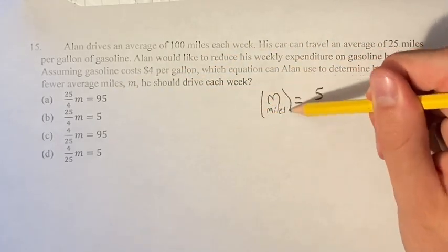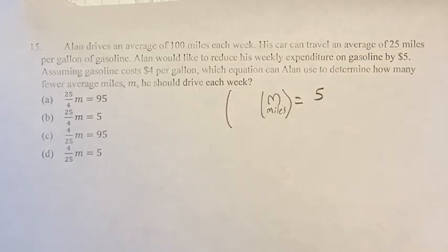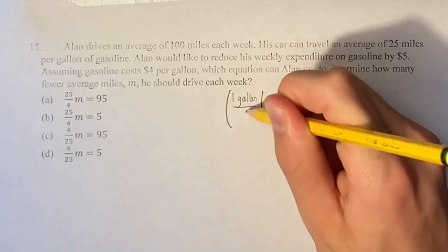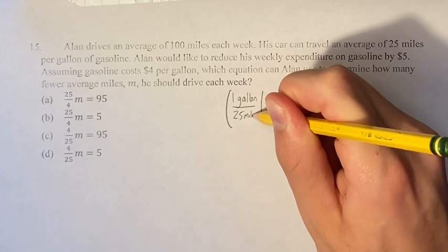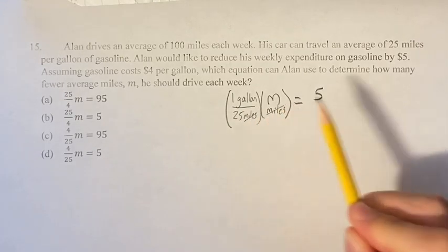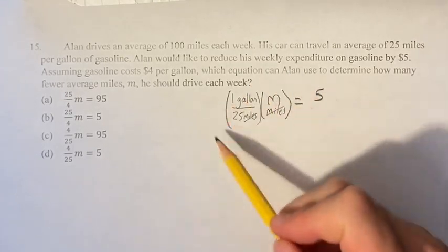So if we have M miles, we multiply this by 1 gallon over 25 miles. What this does is it cancels the miles unit and gets this in terms of gallons.